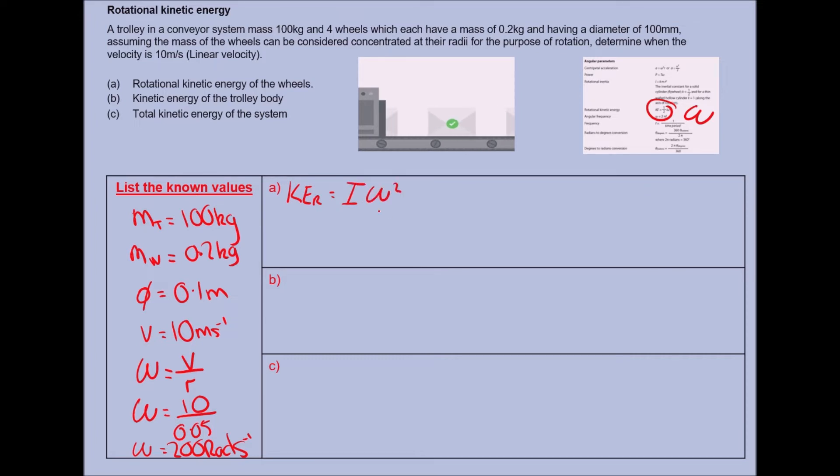I'll pop my formula up here. Kinetic rotational energy is equal to the moment of inertia times angular velocity squared. We know angular velocity, but what we don't know yet is the moment of inertia. We'll go back to our formula and see that rotational inertia or moment of inertia is equal to I equals M K squared.